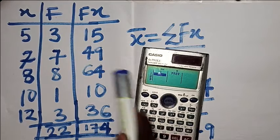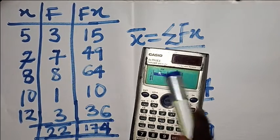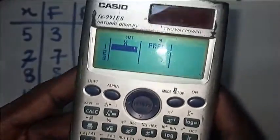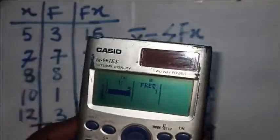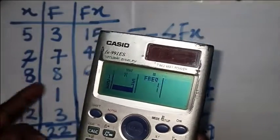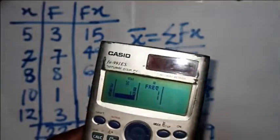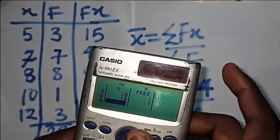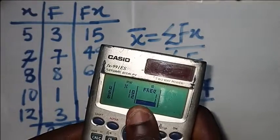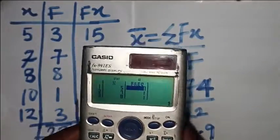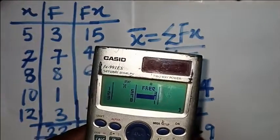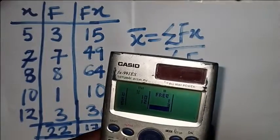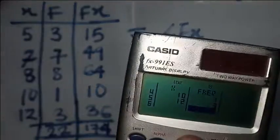Now input your values. Click 5 equals, 7 equals, 8 equals, 10 equals, 12 equals. Automatically your frequencies will be set to 1 for each entry. Then click the arrow to go back to the first frequency entry and input the frequencies: 3 equals, 7 equals, 8 equals, 1 equals, 3 equals. You've now entered all the data.